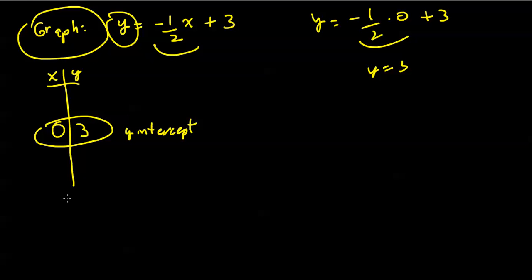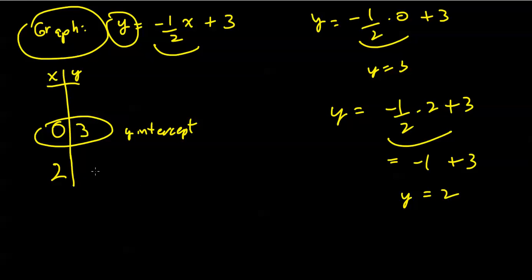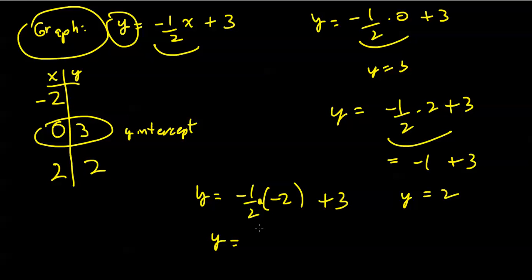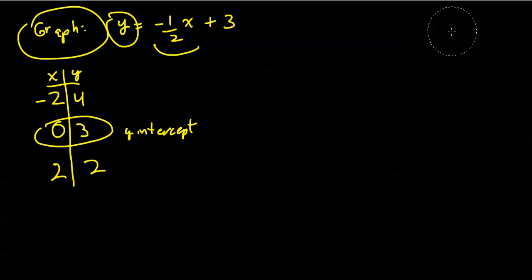I pick multiples of 2 so I don't have cumbersome fraction arithmetic. If x = 2, then y = −½ times 2 plus 3 = −1 plus 3 = positive 2. So when x = 2, y = 2. Let's try x = −2: y = −½ times −2 plus 3 = positive 1 plus 3 = 4. So when x = −2, y = 4.